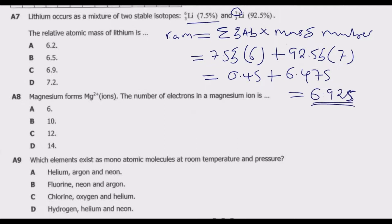Looking at the options, they are given to 1 decimal place. Since the second decimal digit is 2, which is less than 5, this rounds down to 6.9. If it were 5 or above, we would have 7.0. So option C, 6.9, is the correct answer.